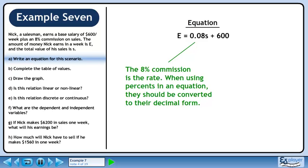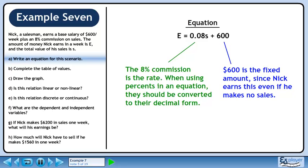The 8% commission is the rate. When using percents in an equation, they should be converted to their decimal form. $600 is the fixed amount since Nick earns this even if he makes no sales.